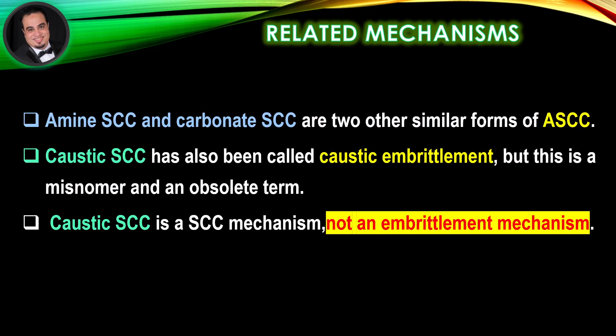Related mechanisms: Amine stress corrosion cracking and carbonate stress corrosion cracking are two other similar forms of alkaline stress corrosion cracking. Caustic stress corrosion cracking has also been called caustic embrittlement, but this is a misnomer and an obsolete term. Caustic stress corrosion cracking is a stress corrosion cracking mechanism, not an embrittlement mechanism.